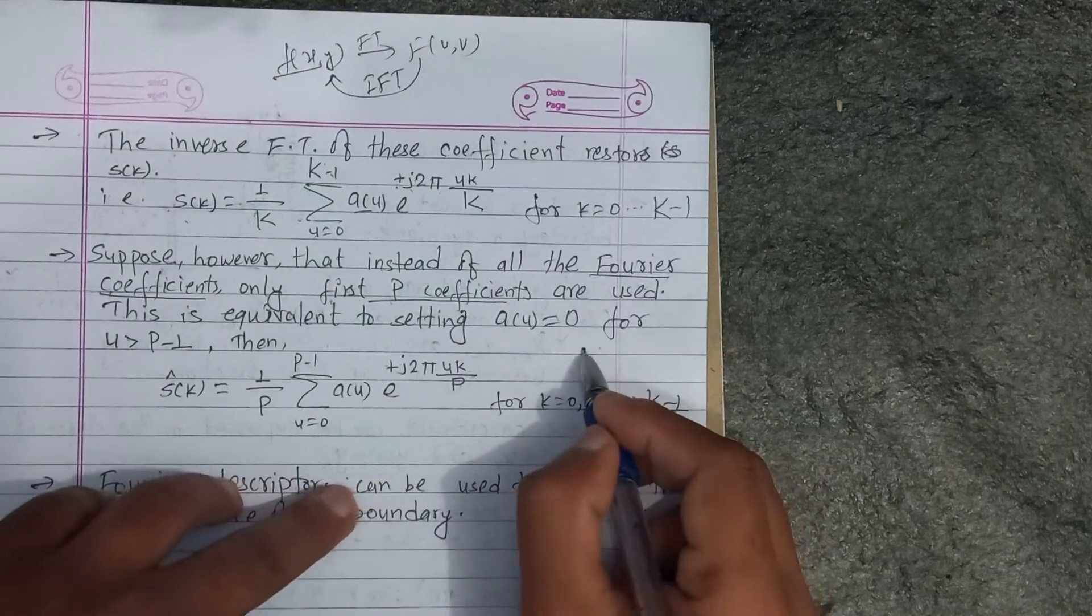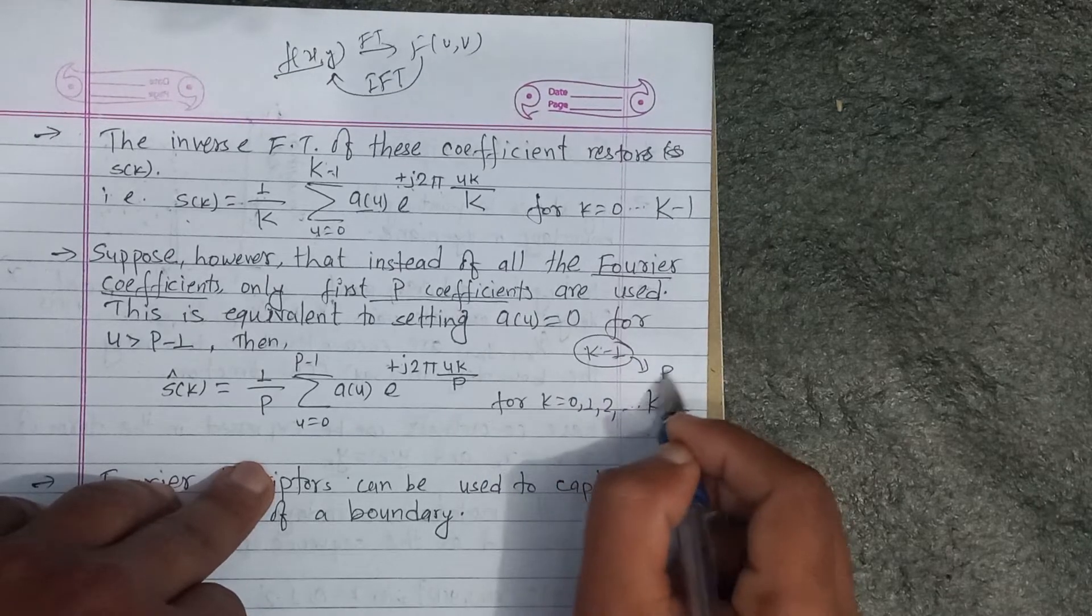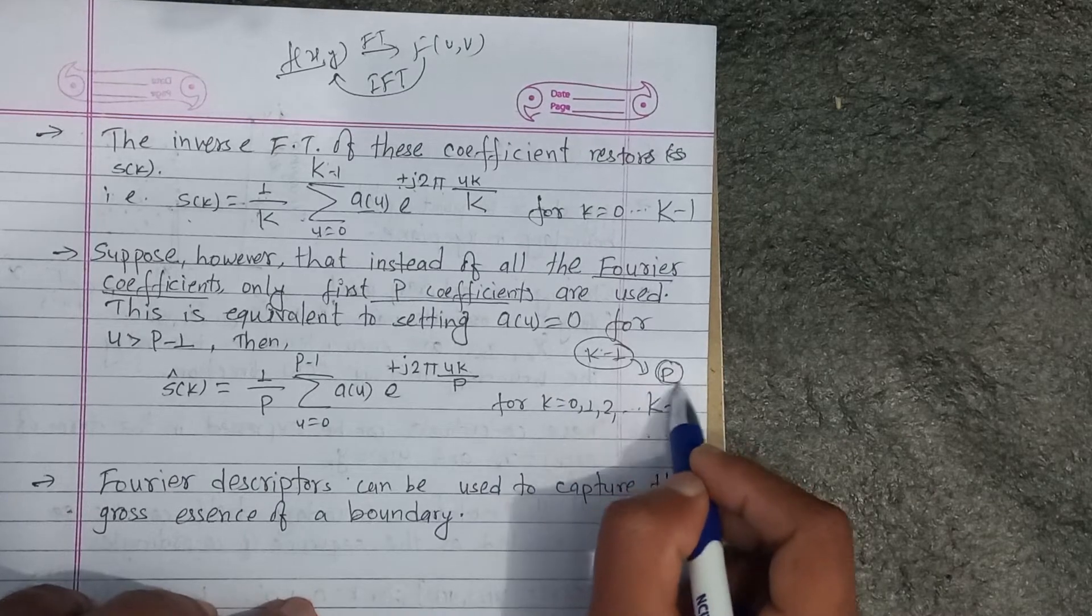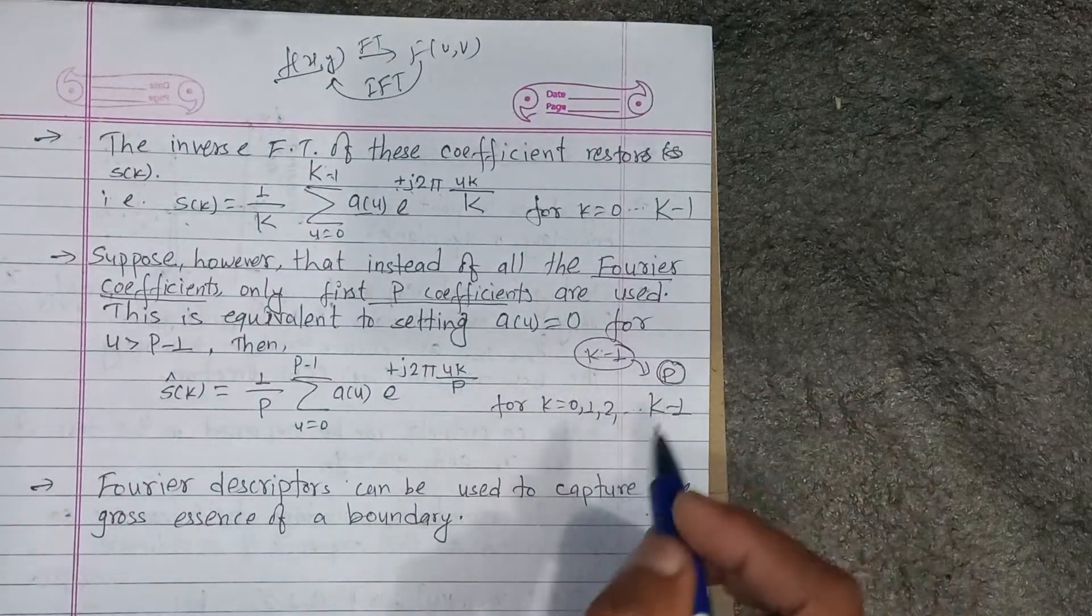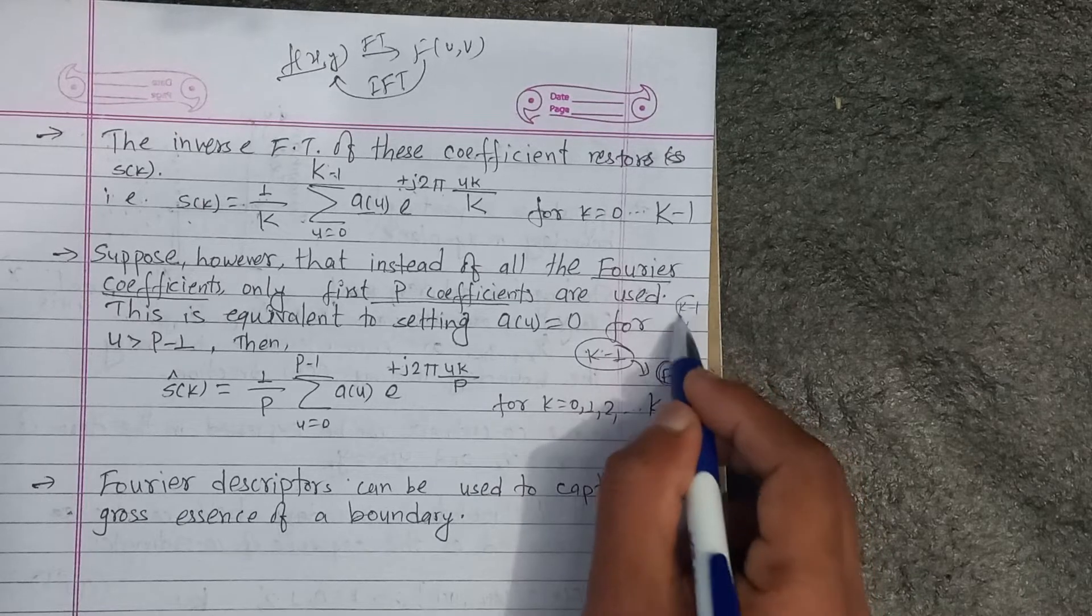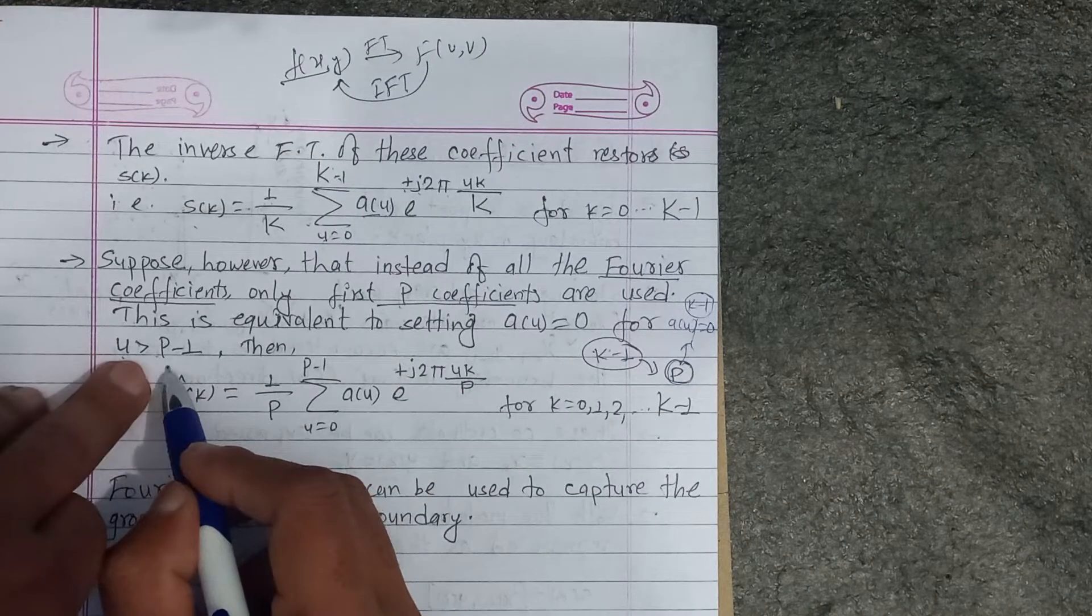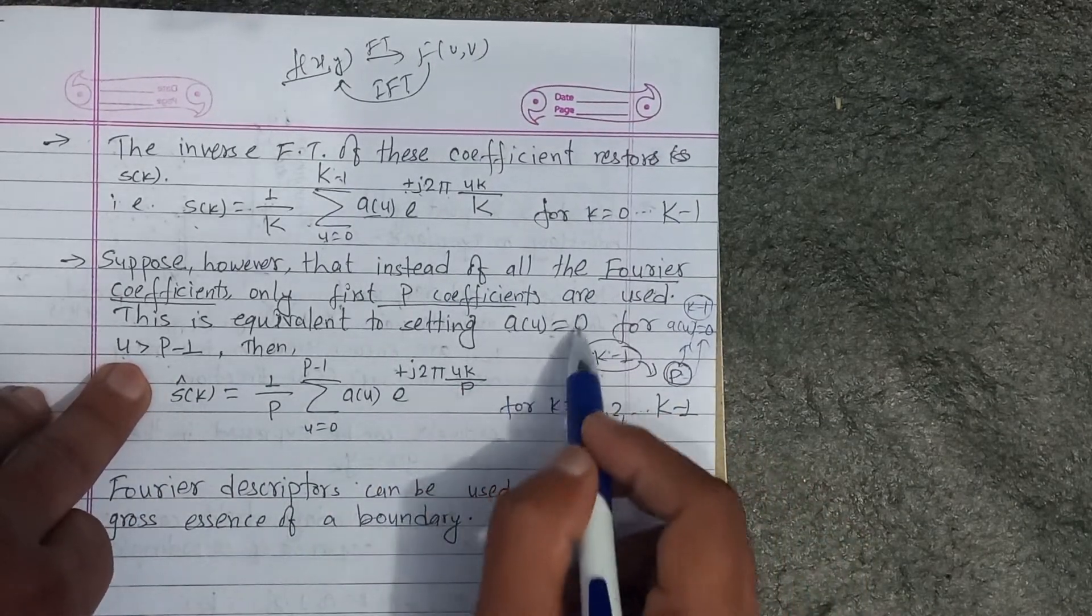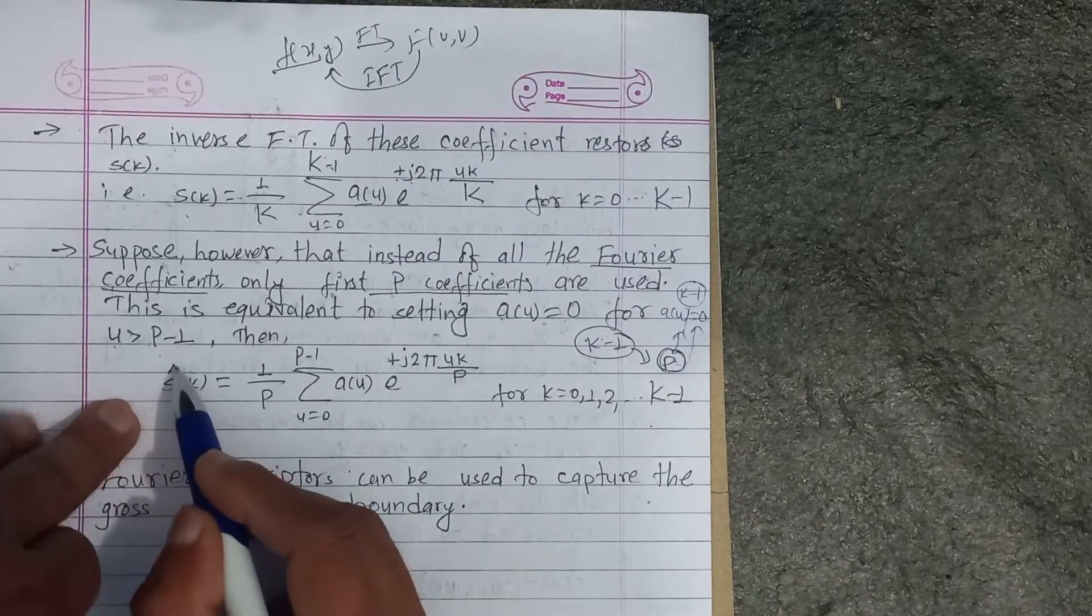This is equivalent to setting a(u) equals to 0 for u from p to k minus 1. So we set a(u) equals to 0 for u from p to k minus 1.